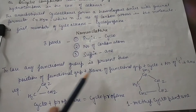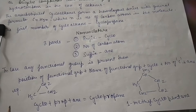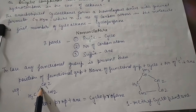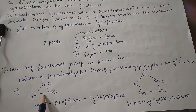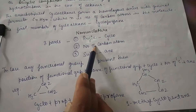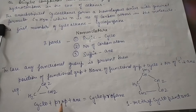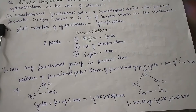This is the format in which we can write the name of a cycloalkane derivative. Let's see the first example: here you can see 3 carbons and no other functional group is present. So first we write the prefix 'cyclo', then number of carbon — 3 carbons means 'prop' — and then the suffix 'ane'. So it becomes cyclopropane.